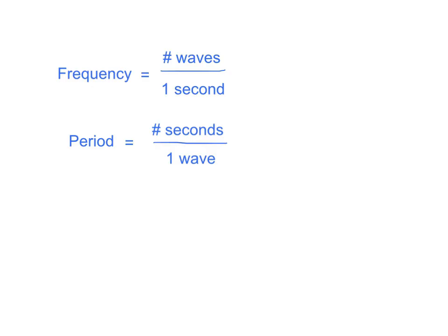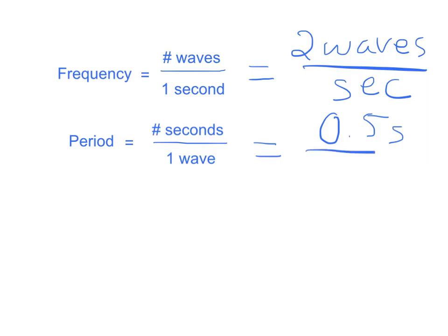So I could see, for instance, that there's a relationship between them. So if I have two waves that go by in one second, that would be the frequency, two waves per second. Therefore, I know that if it takes one second for two waves to go by, it really only takes half a second for one wave to go by. So I can see that there is a reciprocal relationship between the two. The more waves that go by per second, the less time it takes for just one wave to go by. So I could write that as the period of the wave is equal to one over the frequency of the wave.